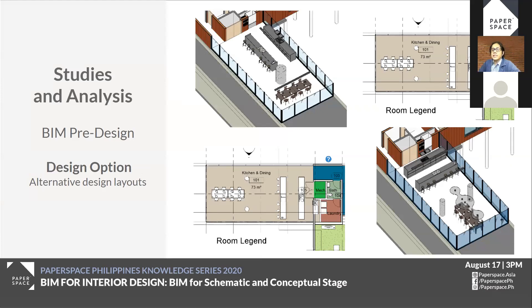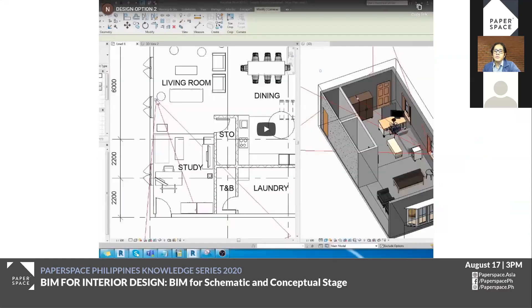When you have a picky or critical client, you may need a lot of alternative designs to showcase in order to provide different options to choose from. Sometimes your first design may not be their first choice, so it's better to be prepared. Another useful feature that is handy in these instances is the Design Option feature in Revit and some other platforms as well. It allows you to generate several design alternatives to have a better chance of landing that project. You can say it's like creating a backup design, which can also be useful to show instantly on the same model.